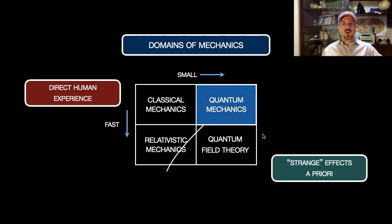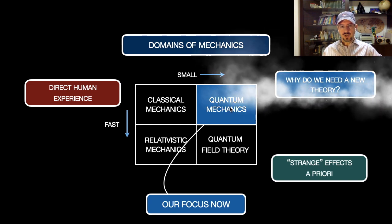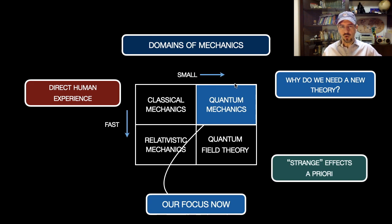We are going to focus on the non-relativistic quantum mechanics. You may ask: why do we need a new theory when describing the motion of small objects under the atomic scale?